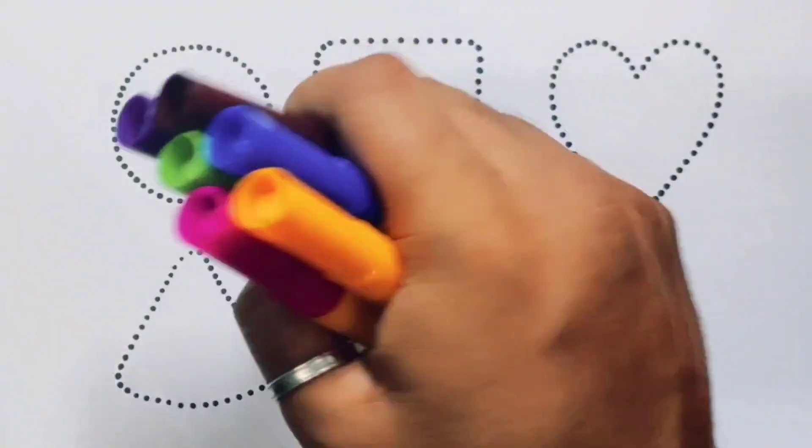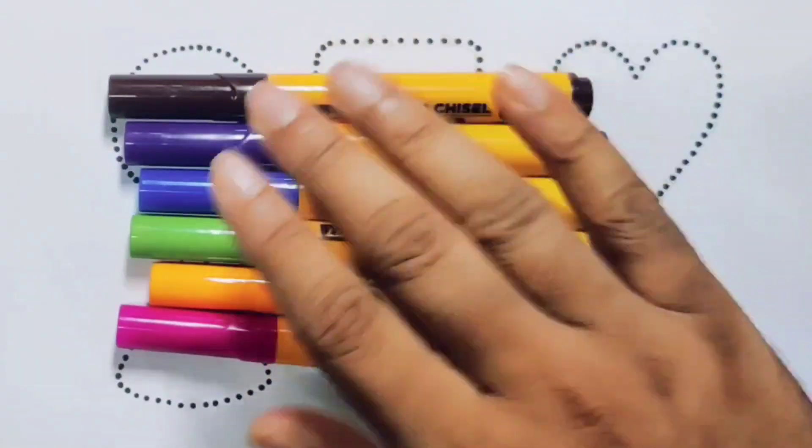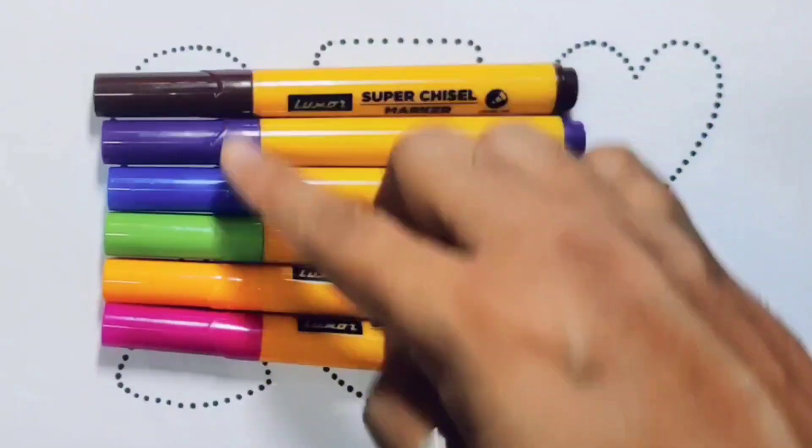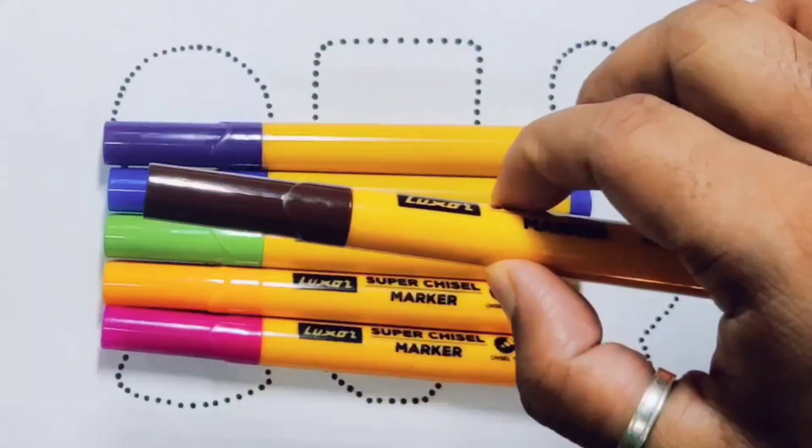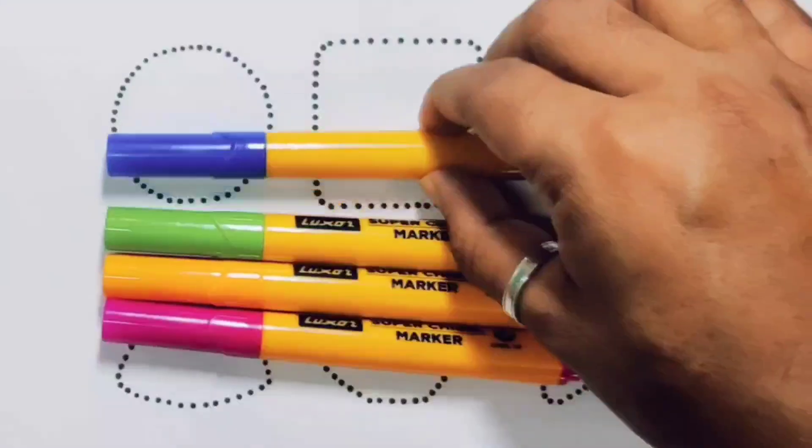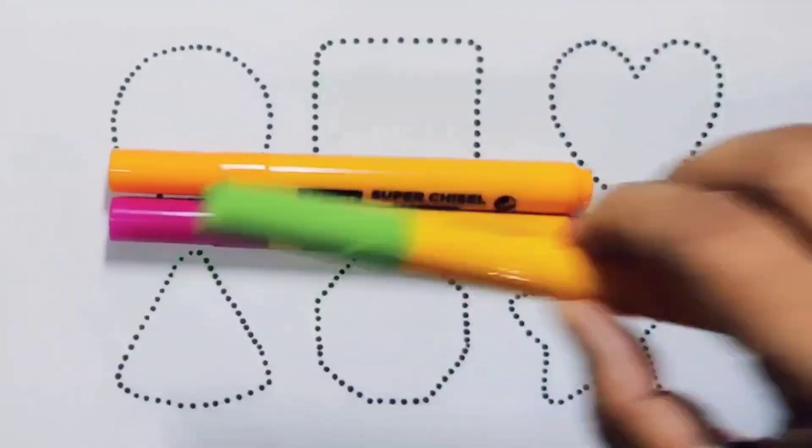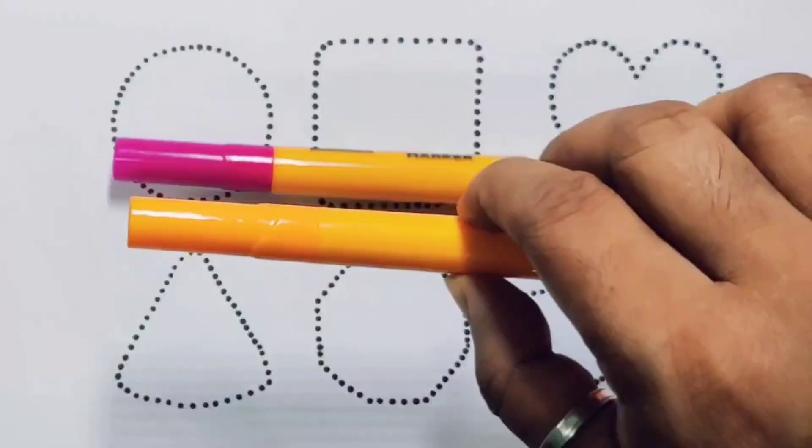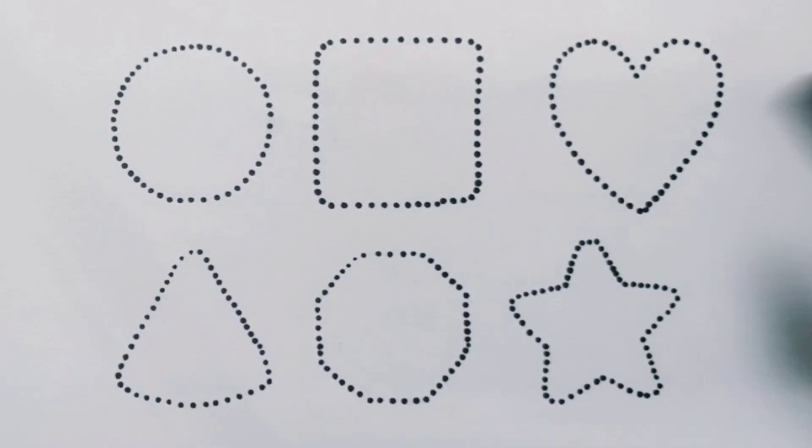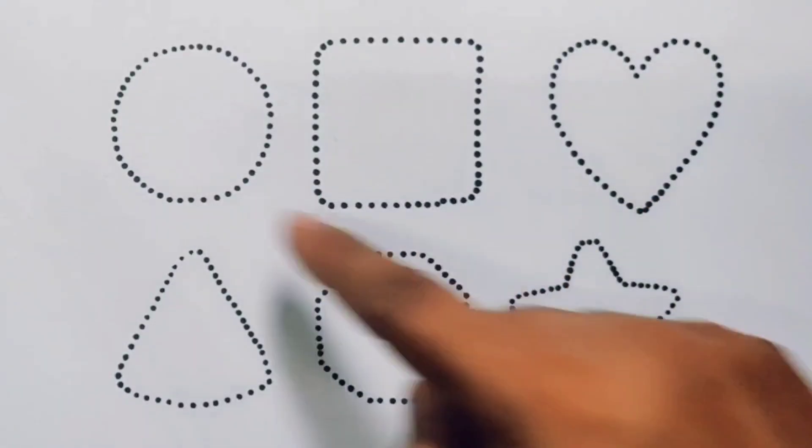Hello kids, welcome to my new video. First you're going to know the color's name: chocolate color, purple color, blue color, green color, orange color, pink color, and black color. Now let's learn the 2D shapes.